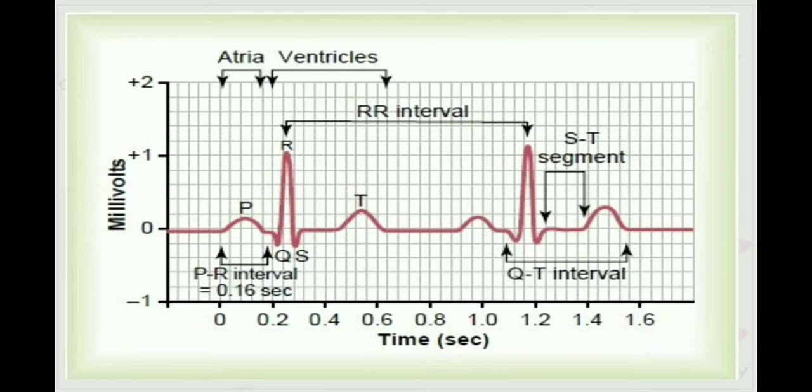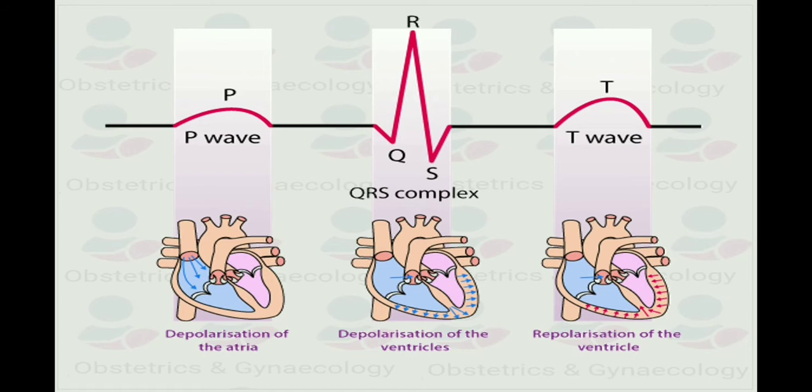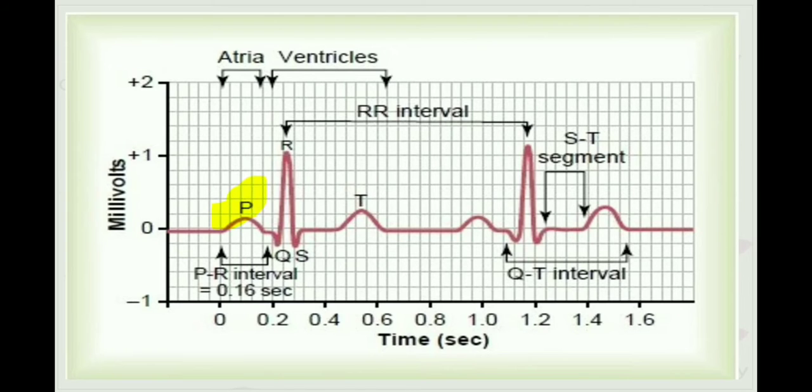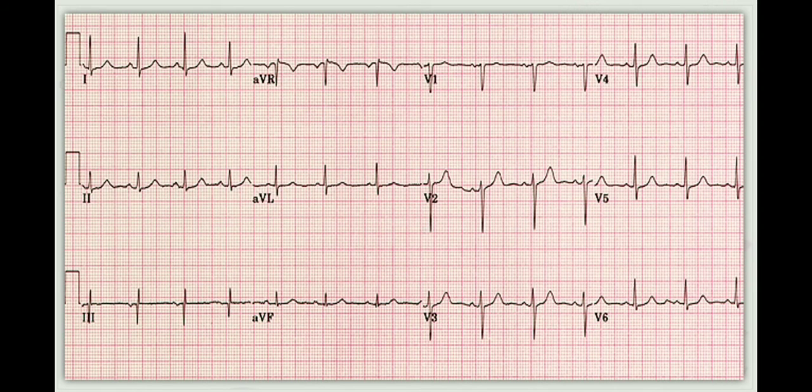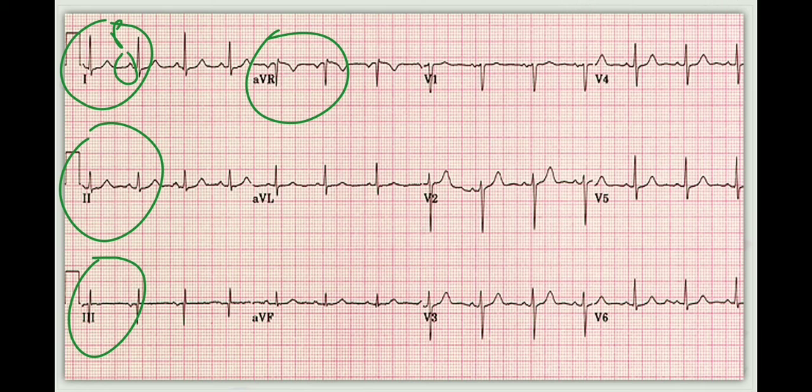Coming to the P wave, it basically indicates atrial depolarization. In the heart we have right atrium, right ventricle, left atrium, left ventricle and on top of the right atrium we have SA node. The impulse which passes from the SA node causes depolarization of the atrium, indicated by P wave in ECG. In other words, the P wave occurs when the sinoatrial node creates an action potential that depolarizes the atrium. In a normal ECG, the P wave is always positive, upright in lead 2 and negative in AVR, usually positive in lead 1 and may be positive, negative or biphasic in lead 3. It has variable polarity in lead AVL.